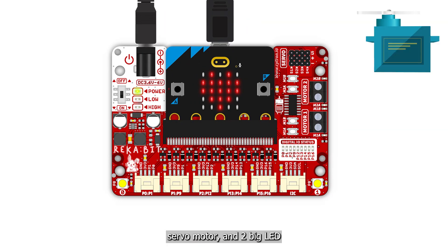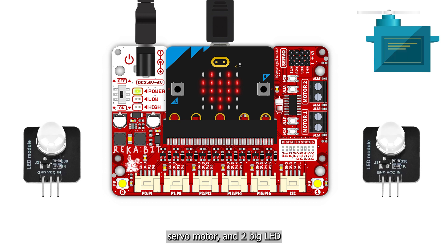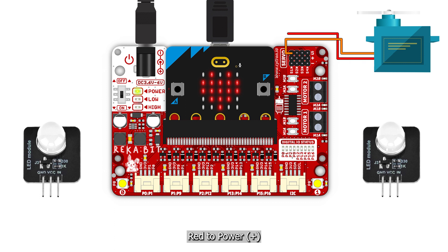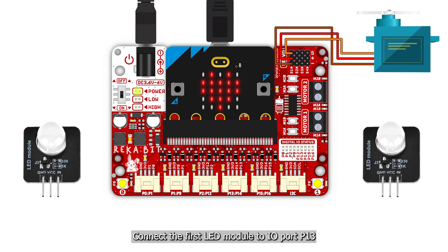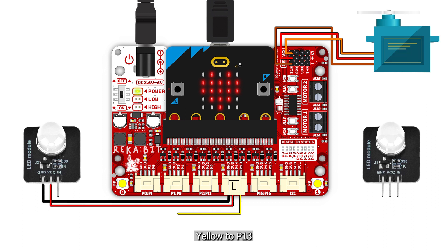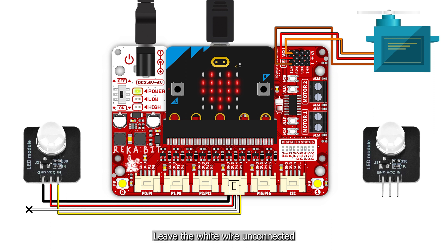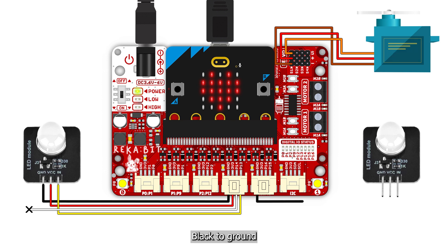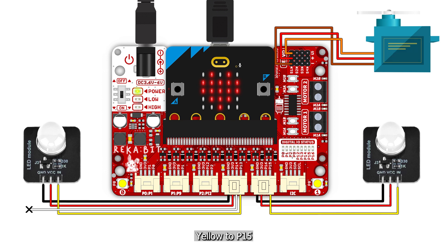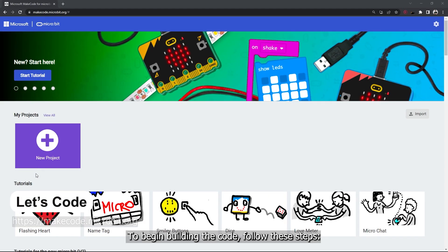For this project we will need Recabit with micro:bit, a servo motor, and two big LEDs. Connect the servo motor to the port labeled S1: orange to signal, red to power, and brown to ground. Connect the first LED module to IO port P13: black to ground, red to VCC, yellow to P13, and leave the white wire unconnected. Connect the second LED module to IO port P15: black to ground, red to VCC, yellow to P15, and leave the white wire unconnected.